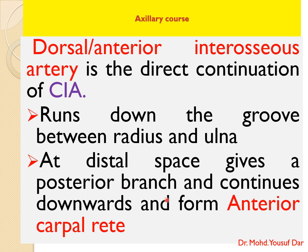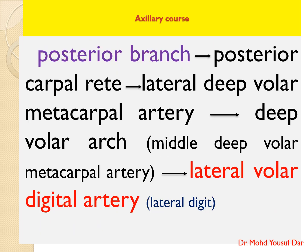At the distal interosseous space, the anterior interosseous artery gives a posterior branch and continues downwards to form the anterior carpal rete. The posterior branch enters through the distal interosseous space, reaches the posterior aspect of the carpus, and forms the posterior carpal rete.